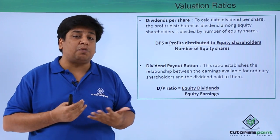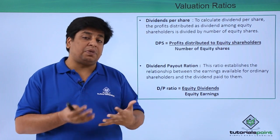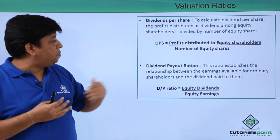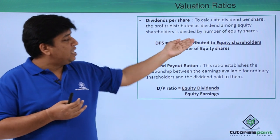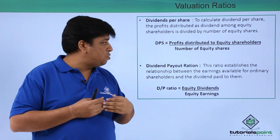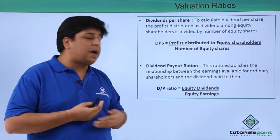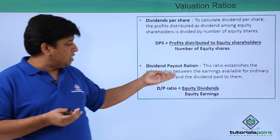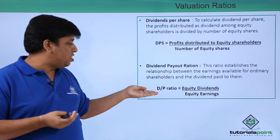The dividend policy of the company will be covered in subsequent videos. To calculate dividend per share, the profits distributed as dividend among equity shareholders are divided by the number of equity shares — that is, dividend divided by number of equity shares.